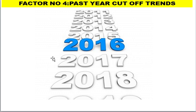The fourth factor is the past year cutoff trend. Please don't confuse — cutoff and minimum mark are the same thing. The past year cutoff trends also help decide the cutoff for the current year.